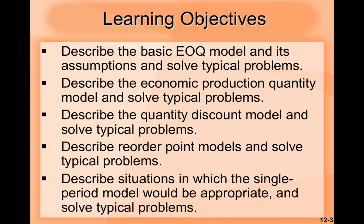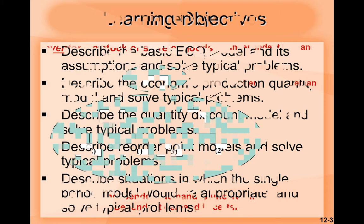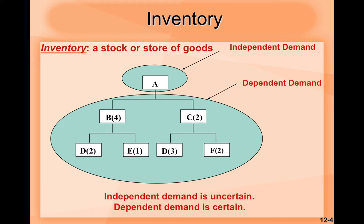This will be a very complete presentation. Now let's look at inventory — what it is and its main organization. First, inventory is a stock or store of goods, used to save your elements and raw materials. In the first place we have independent demand, and in the second one we have dependent demand. Independent demand is uncertain; dependent demand is certain.